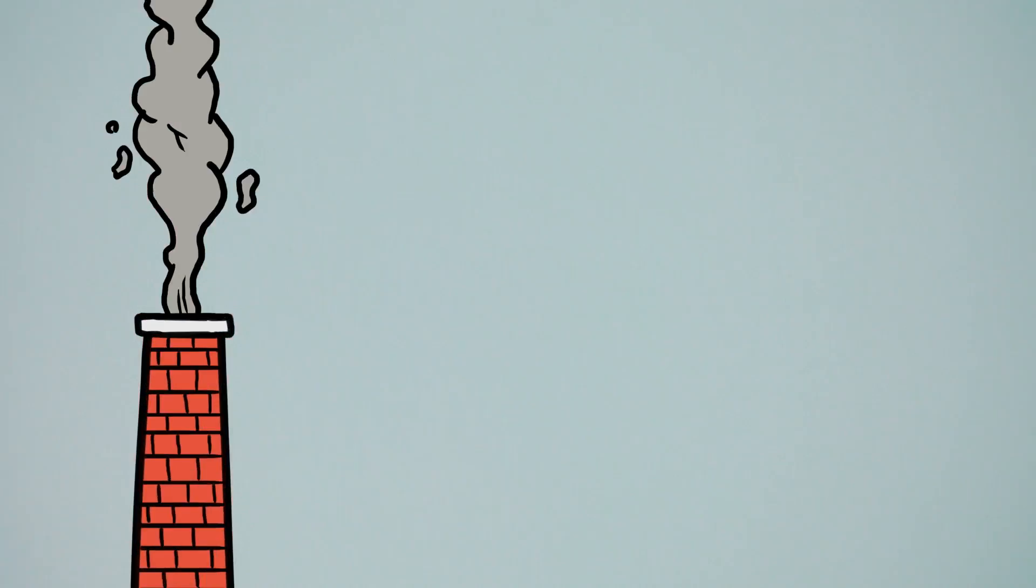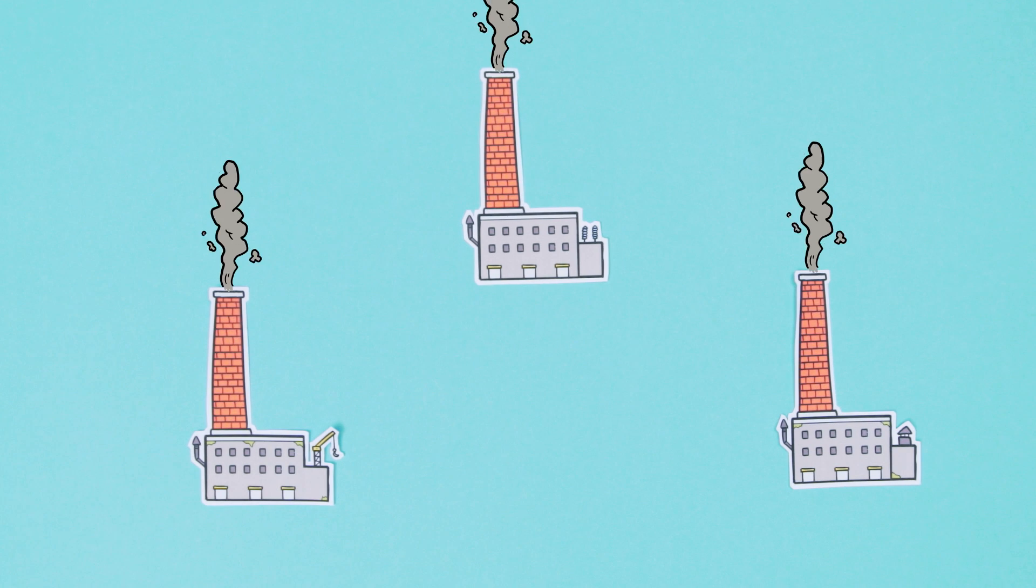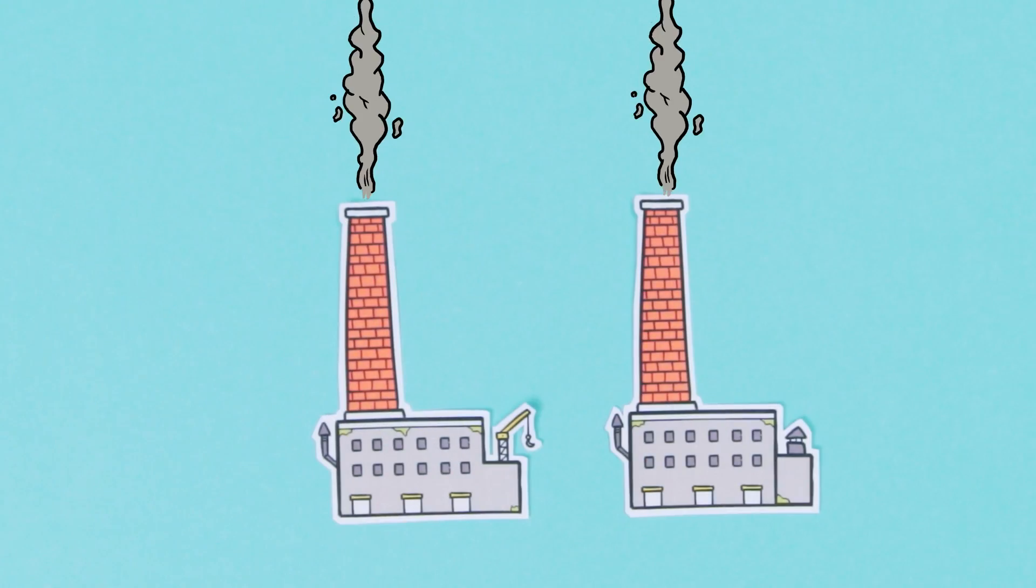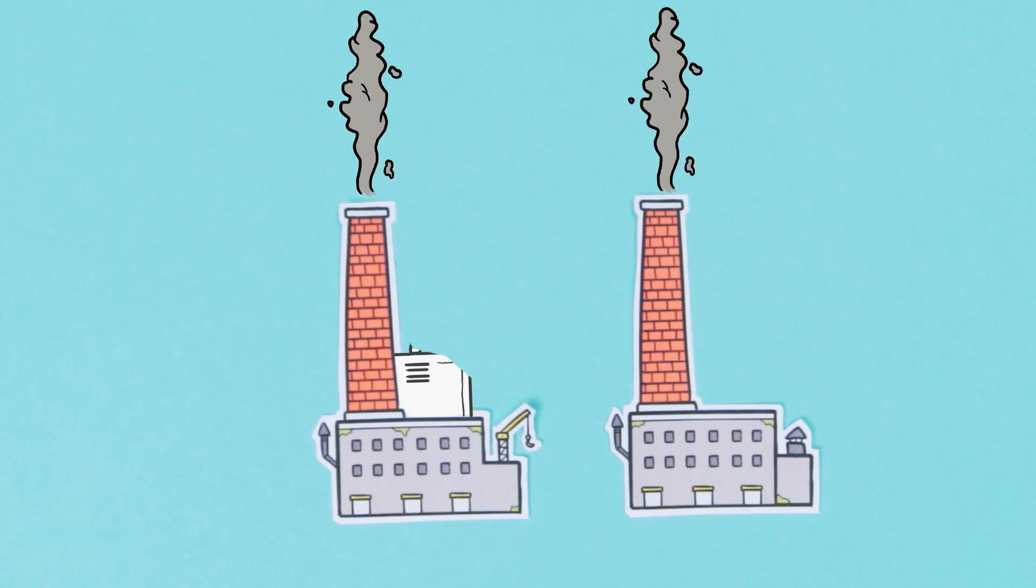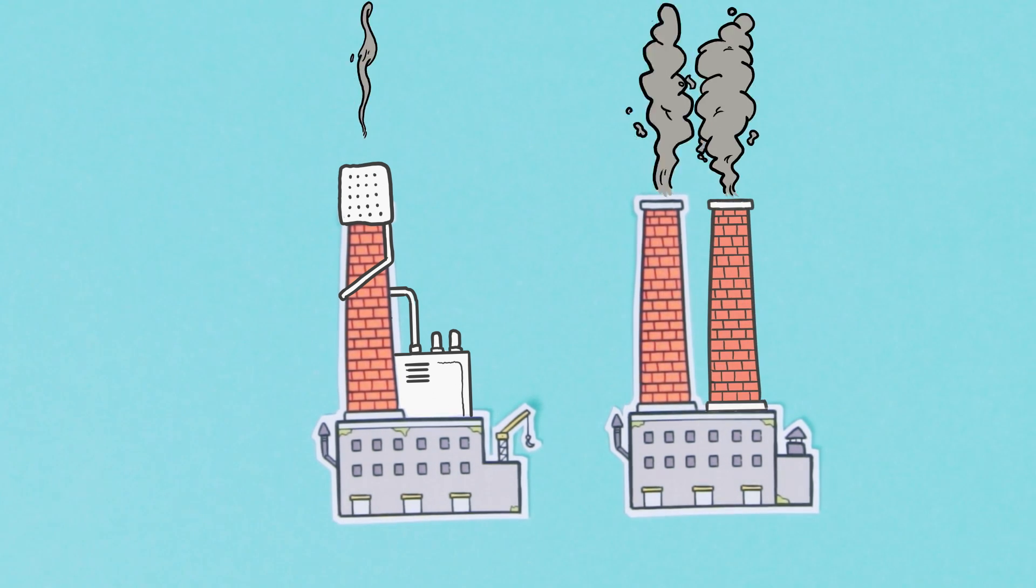For every ton of emissions, the business needs to turn in one allowance. If it needs more or less, they can buy or sell them at a market. If it is cheaper to avoid a ton of emissions and sell an allowance, then the business will do that. But also, the business may choose to emit more and just buy an allowance from another business if that is attractive for both parties.